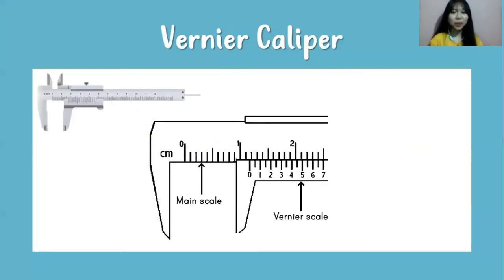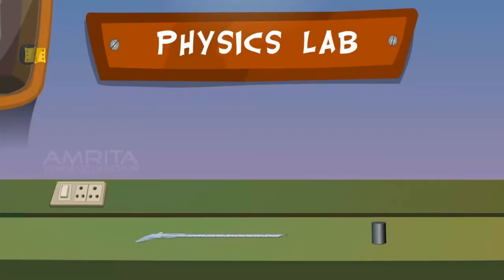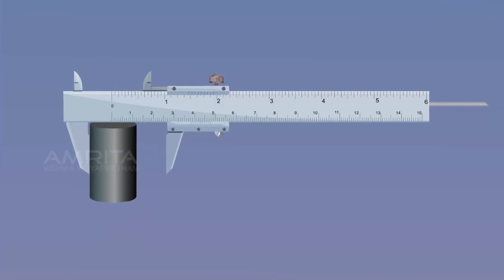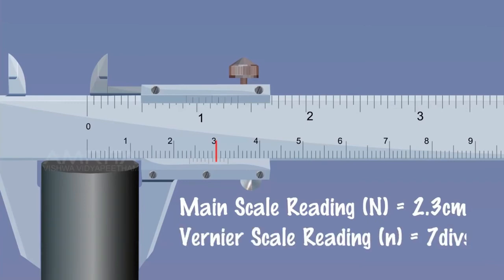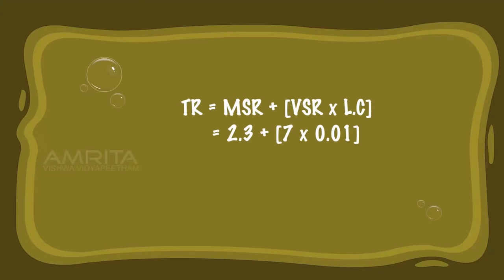The next one is a Vernier caliper, which is usually used to measure a diameter. Let's check the video to see how it works. The scales on a Vernier caliper are the main scale and the Vernier scale. First, you insert the object between the jaws. Then, see the reading on the main scale at the zero pointer of the Vernier scale. Look for the Vernier scale line that is perpendicular to the main scale. The total reading is the main scale reading plus the Vernier scale reading, multiplied by the least count. For a Vernier caliper, the least count is 0.01. The diameter shown here is 2.37 cm.